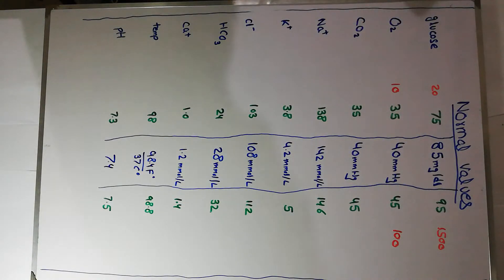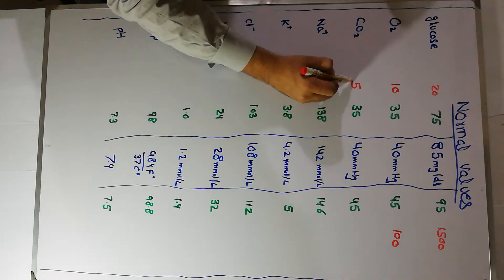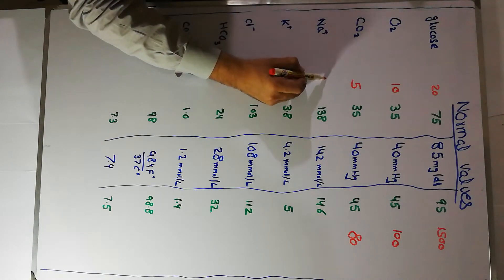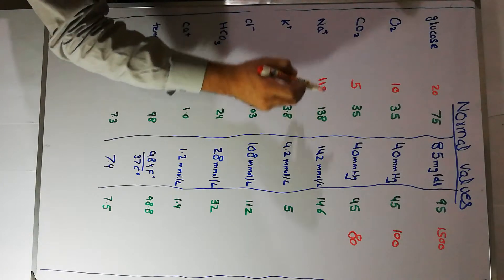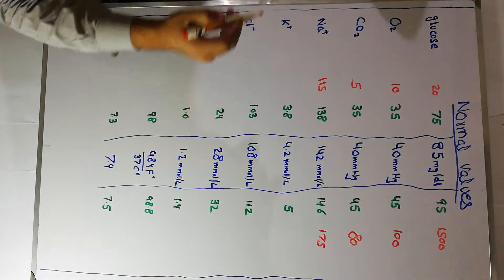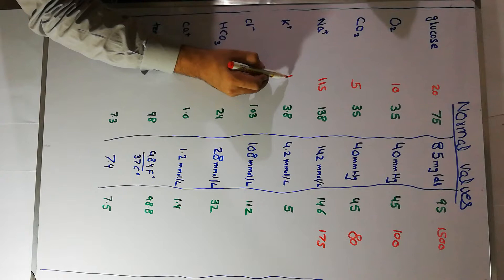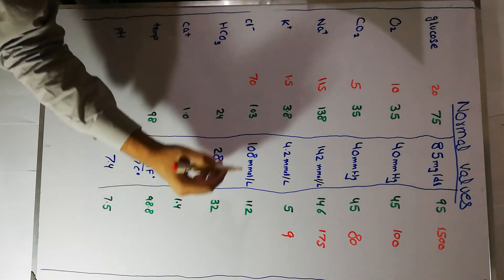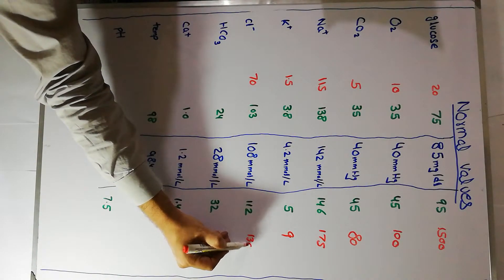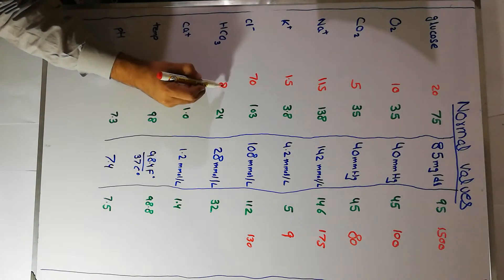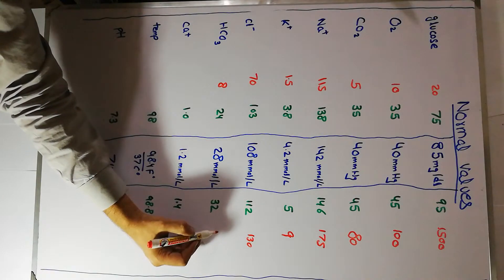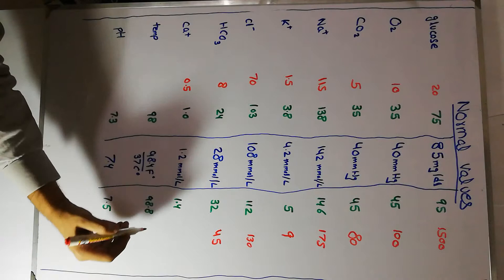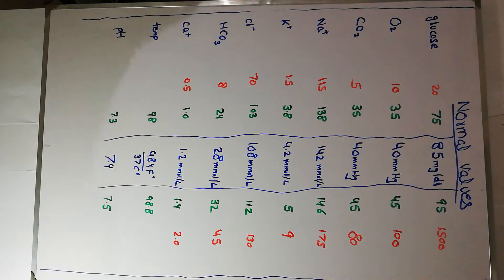Carbon dioxide survival values range from a minimum of about 5 mmHg to a maximum of about 80 mmHg. For sodium, the lower limit is 115 and the upper is 175 millimoles per liter. For potassium it's 1.5 to 9. For chloride it's about 70 to 130. For bicarbonate, the lowest limit is 8 and the maximum is 45 millimoles per liter. Calcium lower limit is 0.5 and upper limit is 2.0 millimoles per liter.